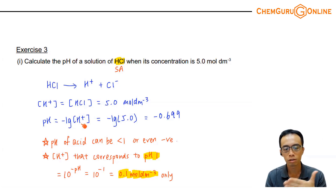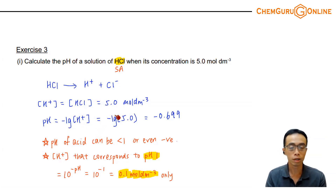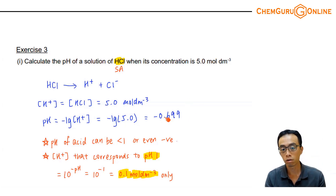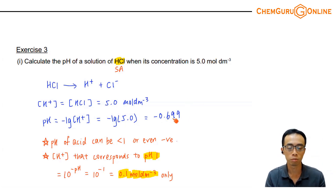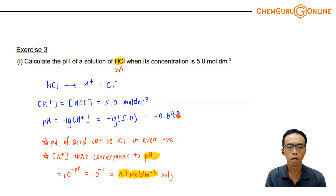pH is minus log of H⁺ concentration. So I can substitute: minus log(5). This would be a negative value, which some of us might find a bit weird — minus 0.699.